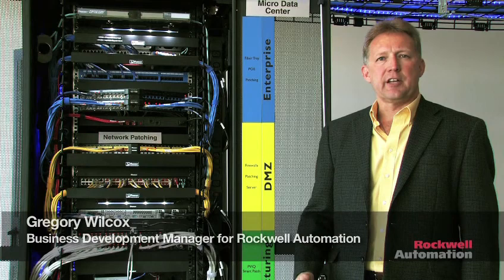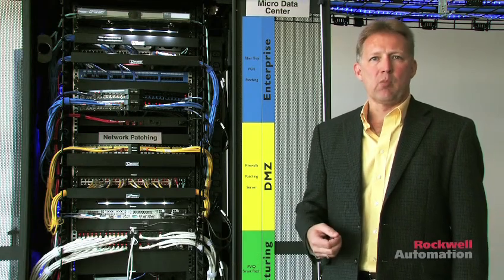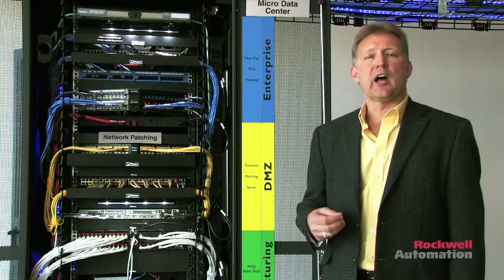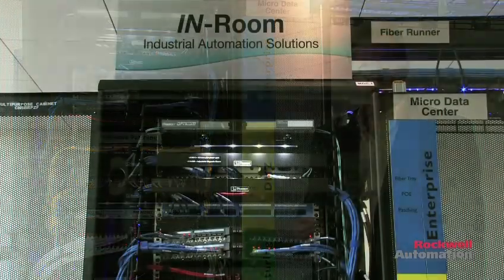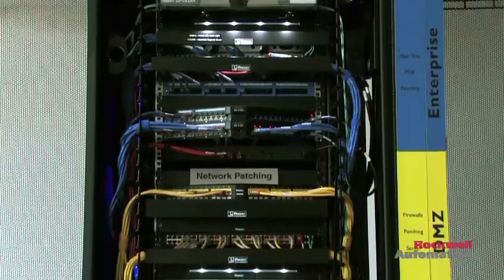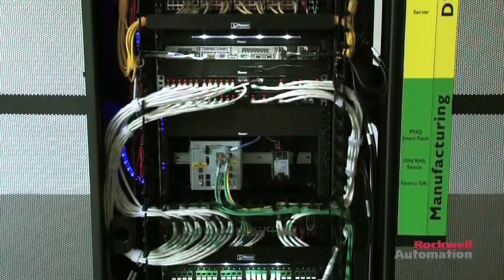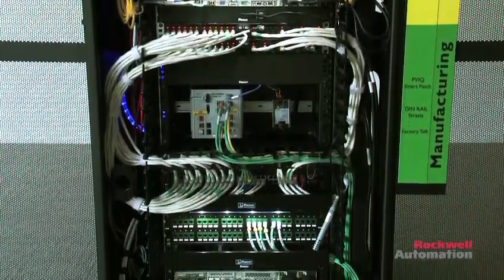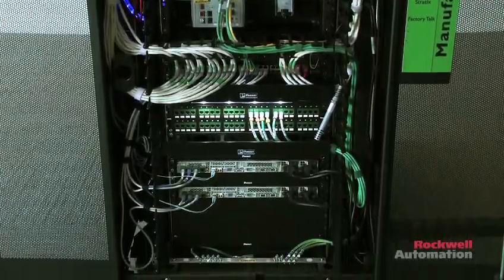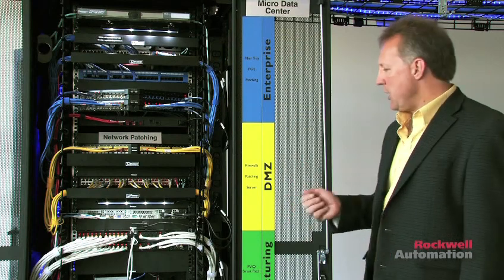The Micro Data Center is an alignment between the Panduit physical framework with the Cisco and Rocco Automation logical framework. It shows the proper representation of physical layout for the CPWE — the Converged Plant-Wide Ethernet architecture — between Cisco and Rocco Automation, specifically the Level 3 site operations in a control room.